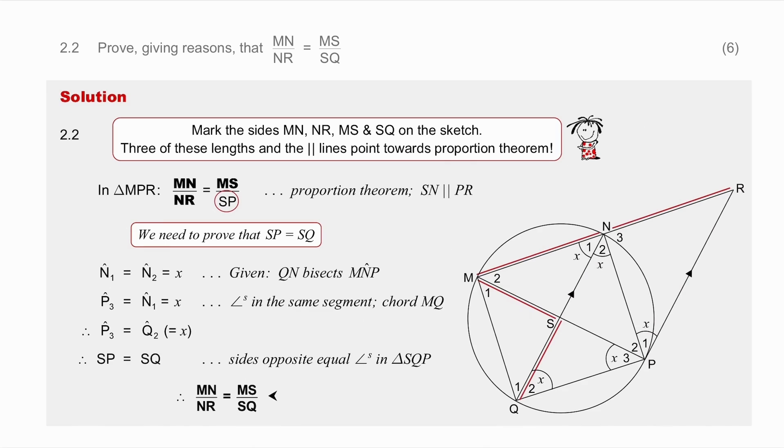I'm then going to start with my x's. I've got that P1 is x already. I've proved that N2 is x because of alternate angles. I proved that Q2 is x because of the tan chord theorem. What have they given me that I haven't used? Well I haven't used the fact that QN bisects angle N. So that means that N1 and N2 are equal. So I've now got that N1 is equal to x.